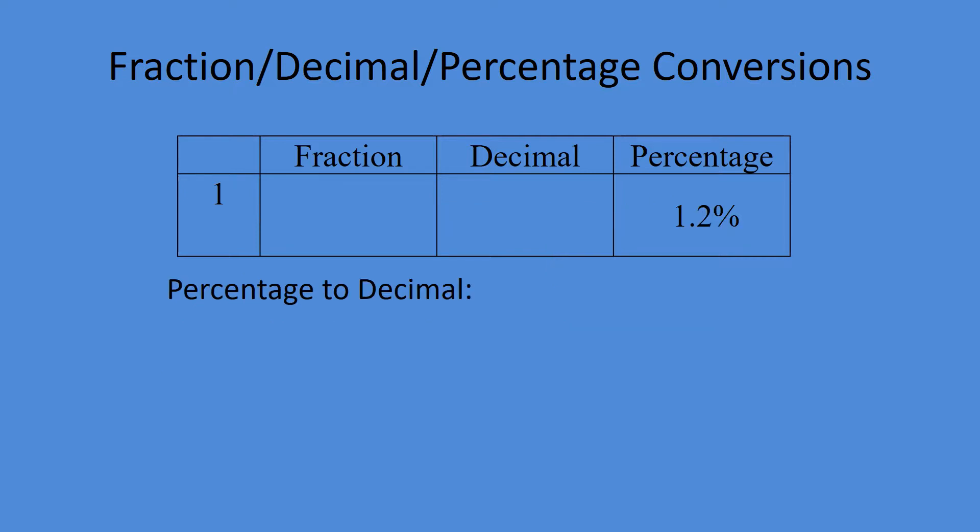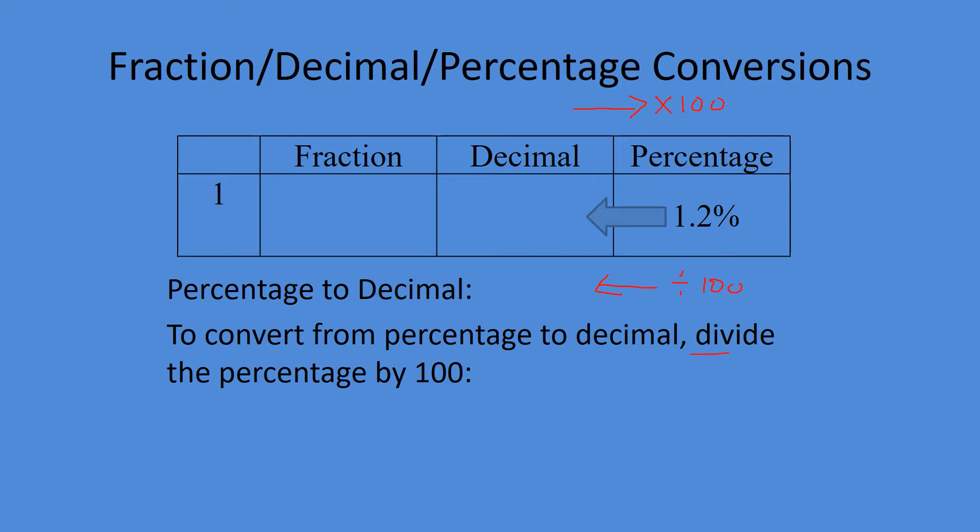Now for this example, we're going to start off in percentage. If we multiplied by a hundred to go from decimal to percentage, then to go backwards, all you have to do is divide by a hundred. Just divide 1.2 by a hundred. You get 0.012. We got tens, hundreds, thousands, so we know our bottom number is going to be a thousand. Just put 12 over a thousand. No reducing to lowest terms needed.